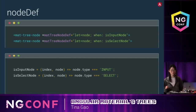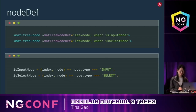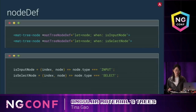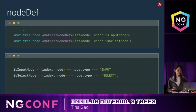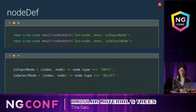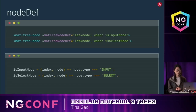Optionally, you can define multiple templates for the node using a when function. The tree will use the template for which the when function returns true. For example, here the node has two types: one is input, one is select. When the type is input, the first function returns true so the first template will be used. When the second function returns true, the node type is select and the second template will be used. There should also be a default template, so when none of the functions returns true, the default template will be used.